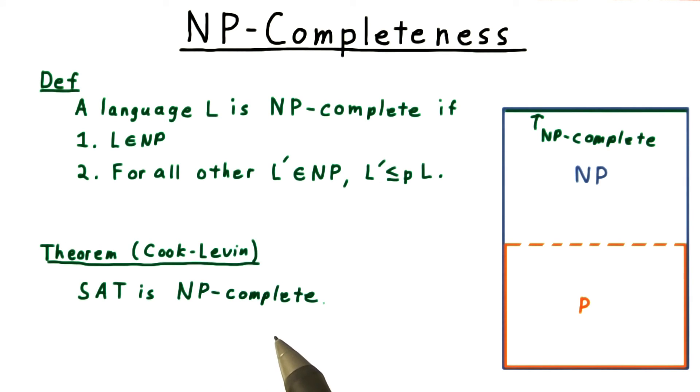The fact that this problem is NP complete is extremely powerful, because once you have one NP complete problem, you just need to reduce it to other problems to show that they too are NP complete. Thus, much of the theory of complexity can be said to rest on this theorem.